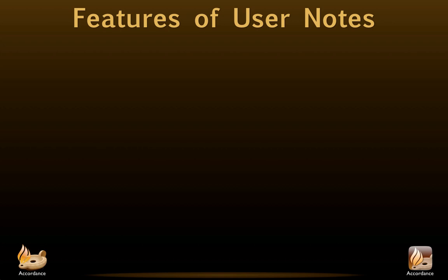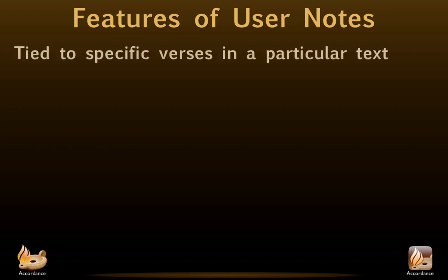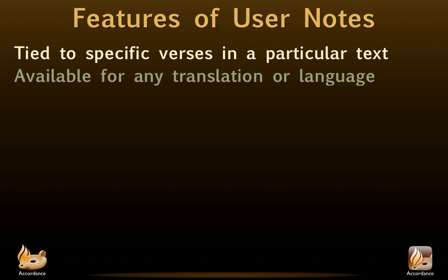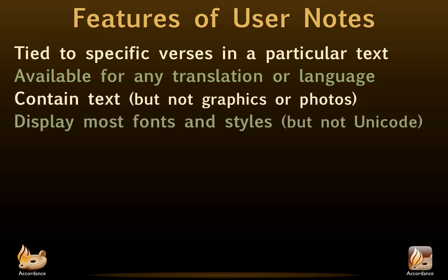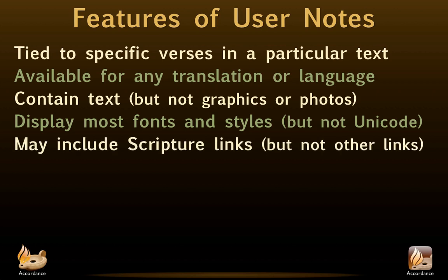User notes are different from user tools and have a different set of features. They are tied to specific verses in a particular text, available for any translation or language, contain text but not graphics or photos, display most fonts and styles but not Unicode, and may include scripture links but not other links.